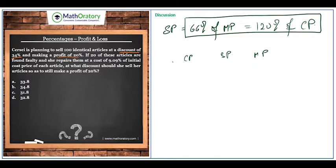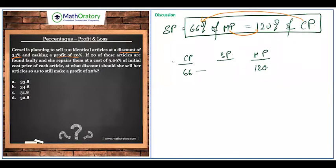This gives MP/CP = 120/66. Rather than simplifying the fraction, assume CP = 66 and MP = 120 — taking cross values to avoid multiplication. For the selling price, using 20 percent profit on CP=66: 10 percent is 6.6, so 20 percent is 13.2. Adding to CP: initial selling price = 66 + 13.2 = 79.2 rupees. This set of data satisfies every relationship, and applies to 100 articles.